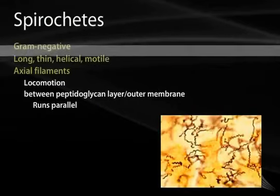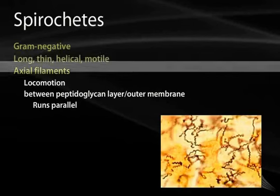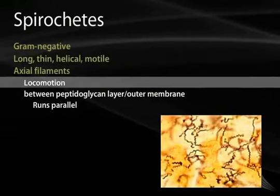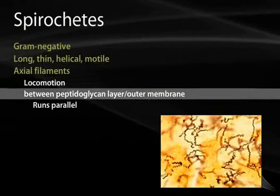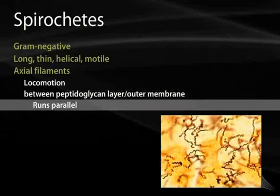Spirochetes are gram-negative, long, thin, helical, and motile organisms that have axial filaments which aid in locomotion. The axial filaments reside between the peptidoglycan layer and the outer membrane, running parallel as axles to help the organism rotate and move.